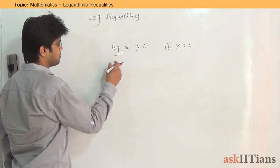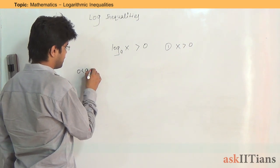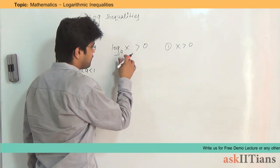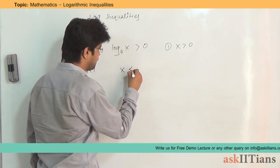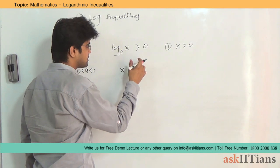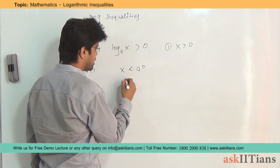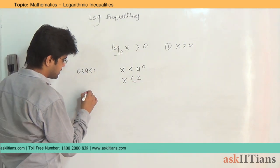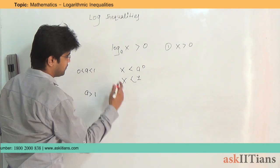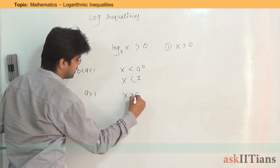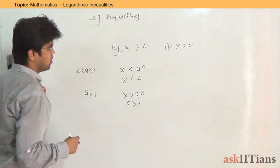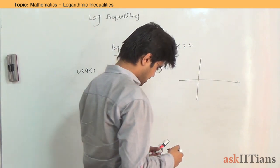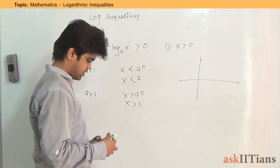Now the condition for the base: if the base is between zero and one and you take the anti-log, the inequality sign changes, and this becomes x less than one. When the base is greater than one, there is no problem — the sign won't change and x must be greater than one. This happens because the graph behaves differently for base greater than one versus base less than one.